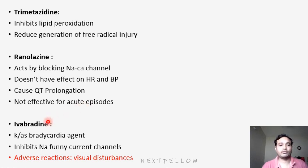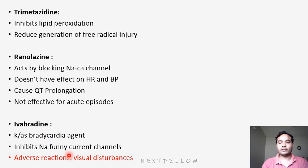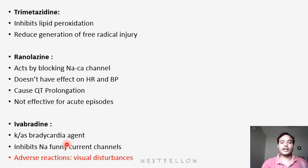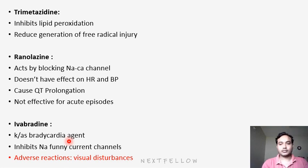Next is ivabradine. This is a recently asked MCQ topic. Ivabradine acts through the sodium funny channel (If current channels). It is also known as a bradycardia agent — it reduces heart rate, thereby decreasing oxygen consumption on the heart. The main adverse effect is visual disturbances, which is also a repeated MCQ point. So the key points for ivabradine: it blocks the funny (If) sodium channels, and the ADR is visual disturbance. Thank you.